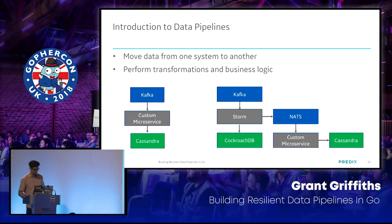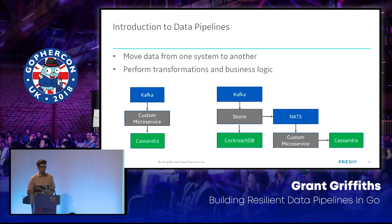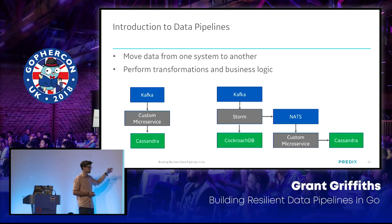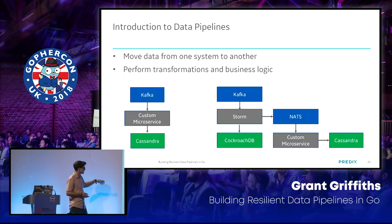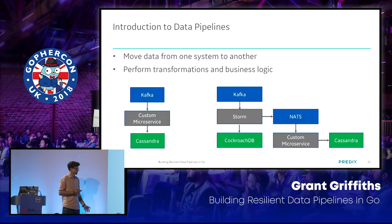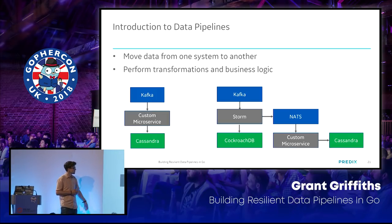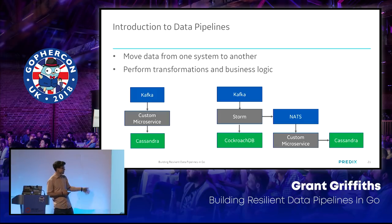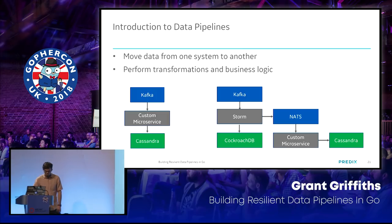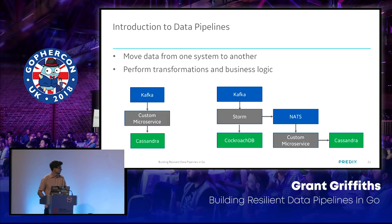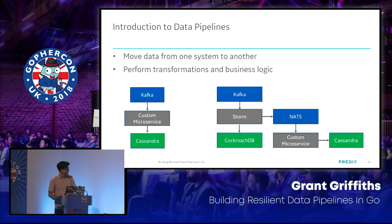At a high level, a data pipeline is basically moving data from one system to another while doing some business logic and transformations. You might have something like Kafka where all your messages go — chat messages, sensor data, anything — and a microservice parses it and writes it to Cassandra. Or you could have a more complex chain: Kafka to Storm, then Nats, then something else. Microservices architecture can get quite large.